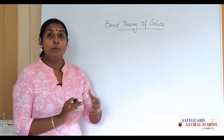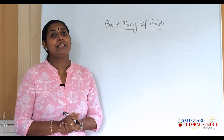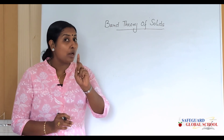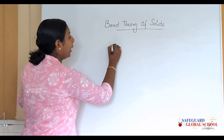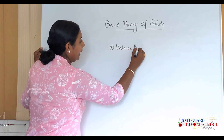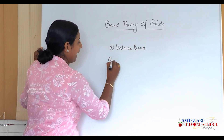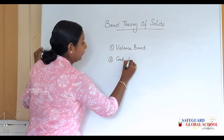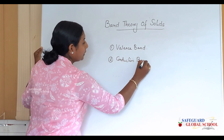As we have studied about bands, we should know the types of bands in a solid. In a solid, bands are of two types: valence band and conduction band.